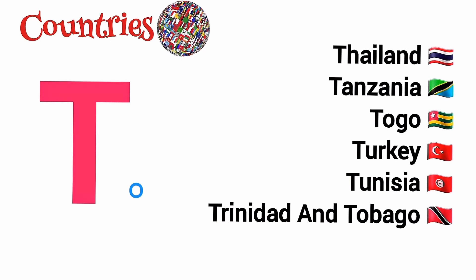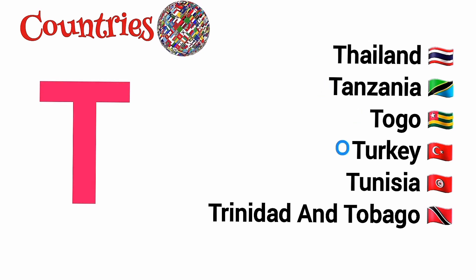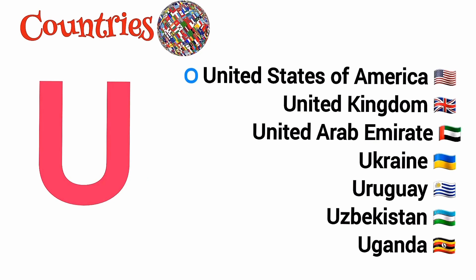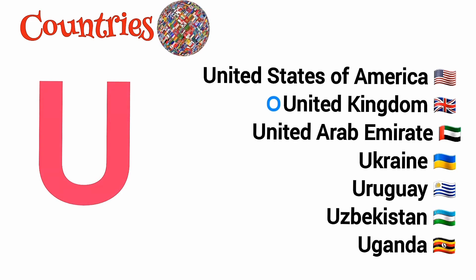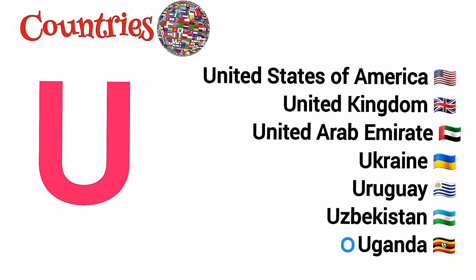T is for Thailand, Tanzania, Togo, Turkey, Tunisia, Trinidad and Tobago. U is for United States of America, United Kingdom, United Arab Emirates, Ukraine, Uruguay, Uzbekistan, Uganda.